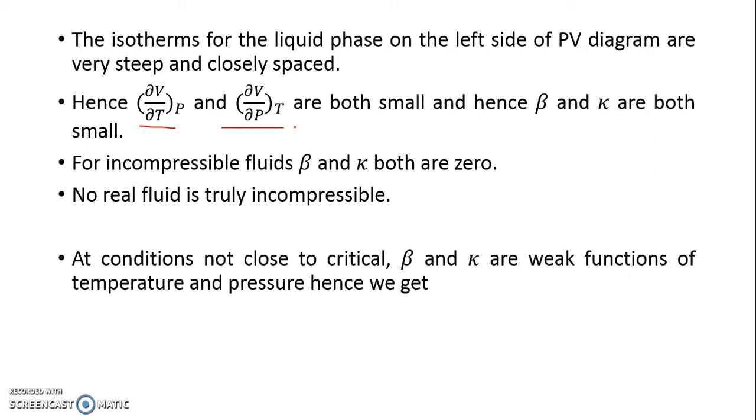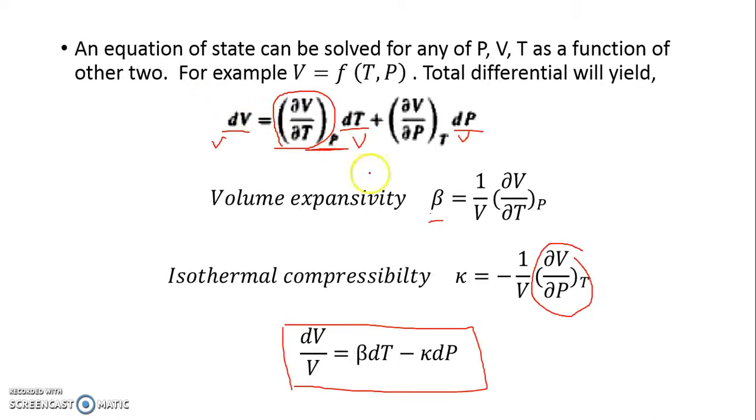At conditions not close to critical temperature and pressure, β and κ are weak functions of temperature and pressure. So they do not vary much along with temperature and pressure. Though they are functions of temperature and pressure, if the range of pressure is away from the critical point, the variation in volume with respect to temperature is not much.